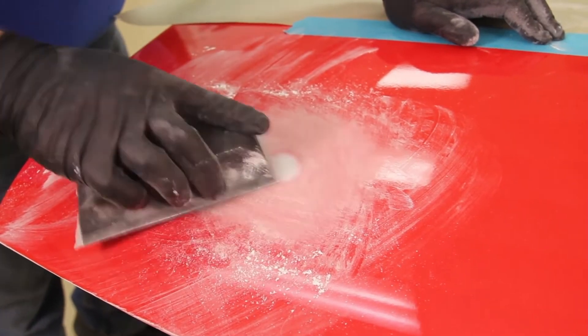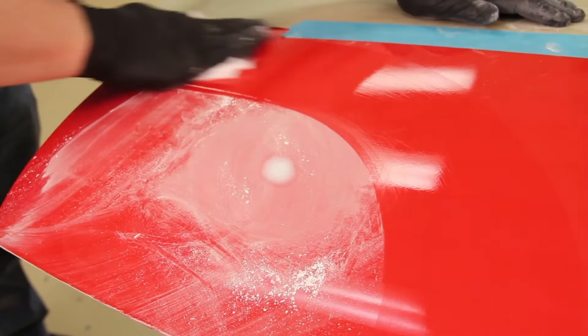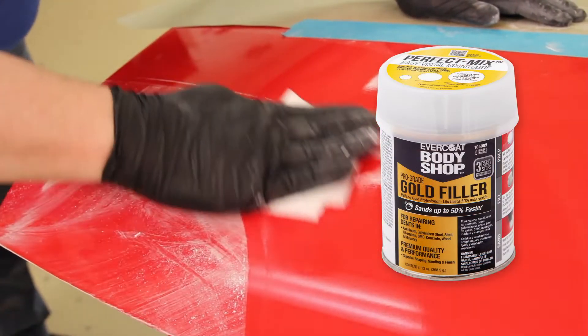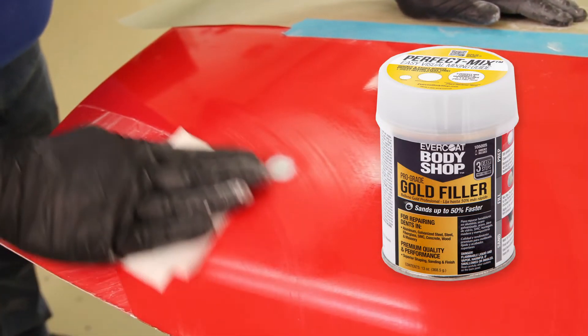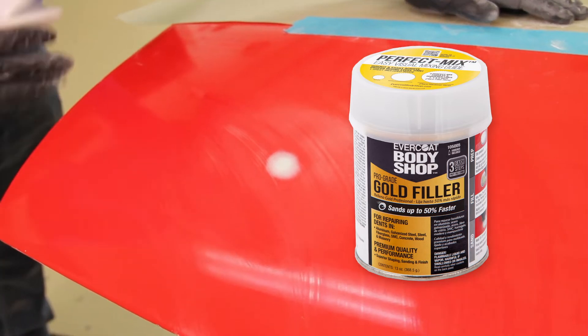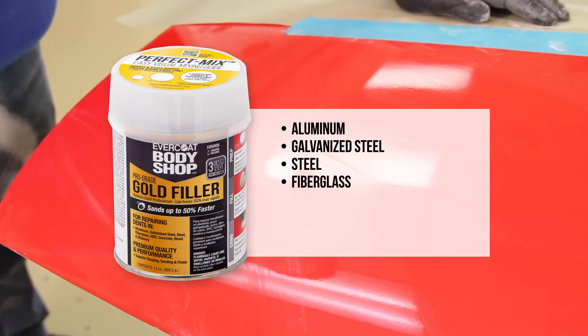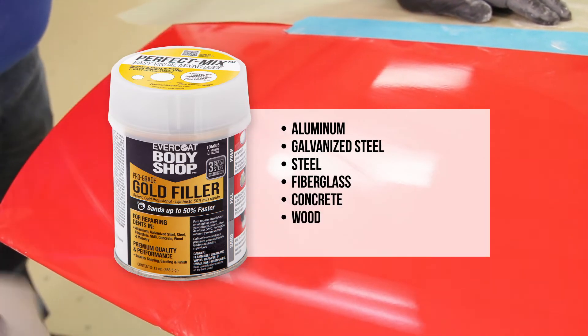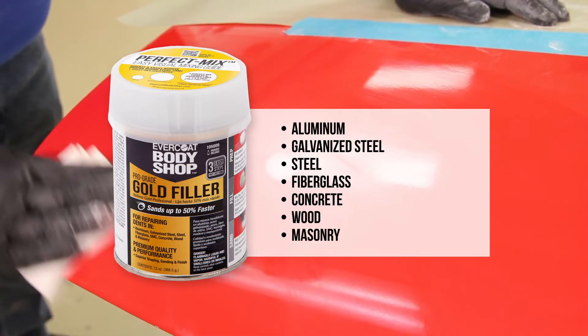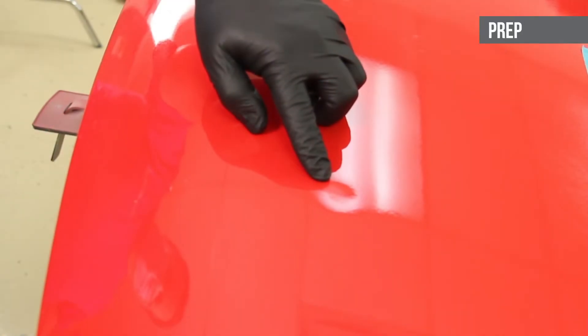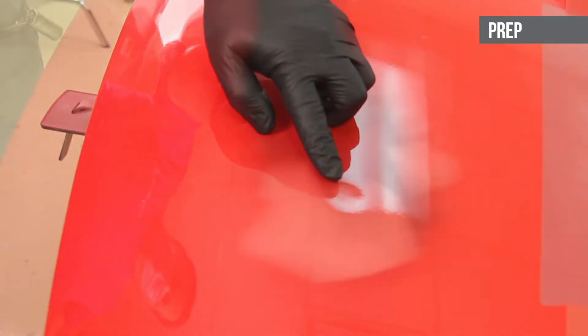Evercoat Body Shop pro-grade gold filler performs on many substrates including aluminum, galvanized steel, steel, fiberglass, concrete, wood, and masonry. Gold filler offers premium quality and performance with its superior shaping and sanding qualities.